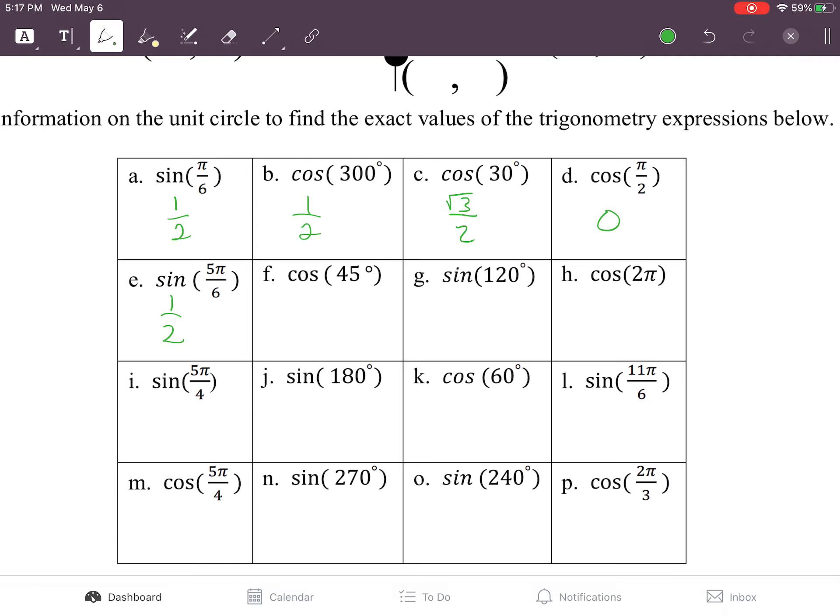Cosine of 45, so the x term is root 2 over 2. At 120, the y value is root 3 over 2. At 2π, which is the same thing as 0π, the cosine value is going to be the x term, which is 1.